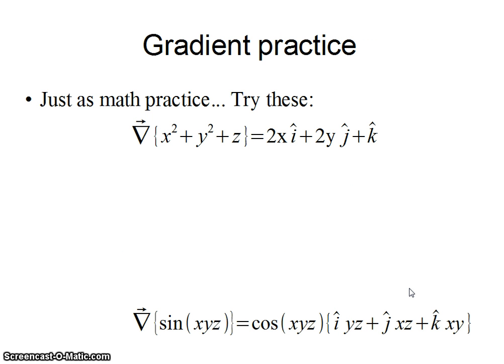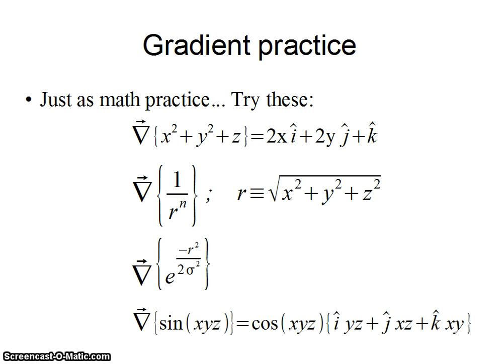The first two examples that we played with, people jumped in and got them pretty much right away so I won't really review much about them. They're shown on the page here. The two that I had in the same set that I left hanging were a little more complex. The first one was a gradient of a function that was 1 over r to the n where n is some number and r is defined as the distance from the origin to a point, so it's the square root of x squared plus y squared plus z squared.